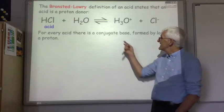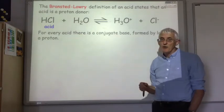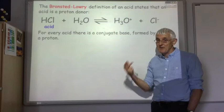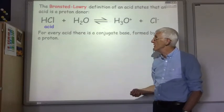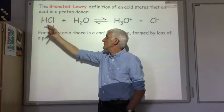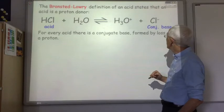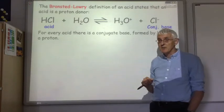For every acid there's also something called the conjugate base which is formed by the loss of a proton. So it's the bit that's left over once you've lost the proton. So when HCl loses its proton you're left with Cl-. Cl-, the chloride ion in this case, is the conjugate base.